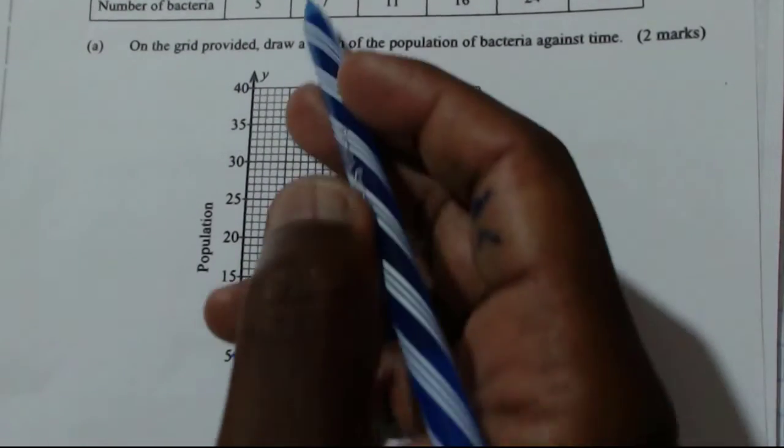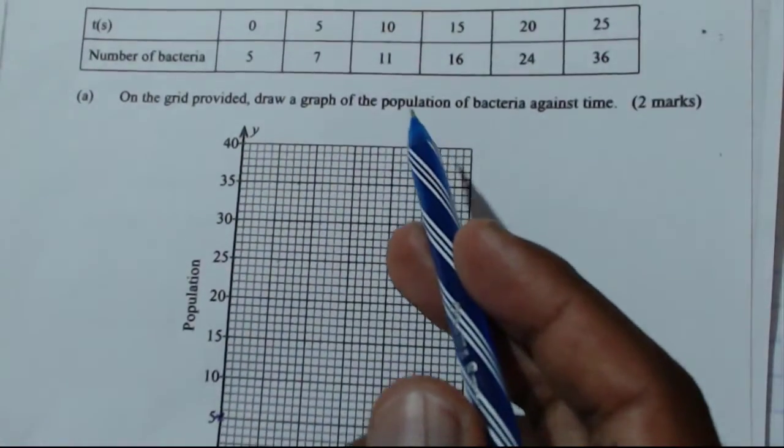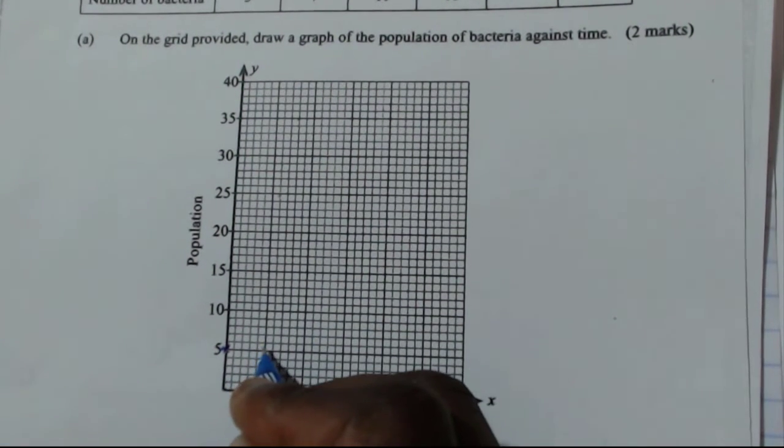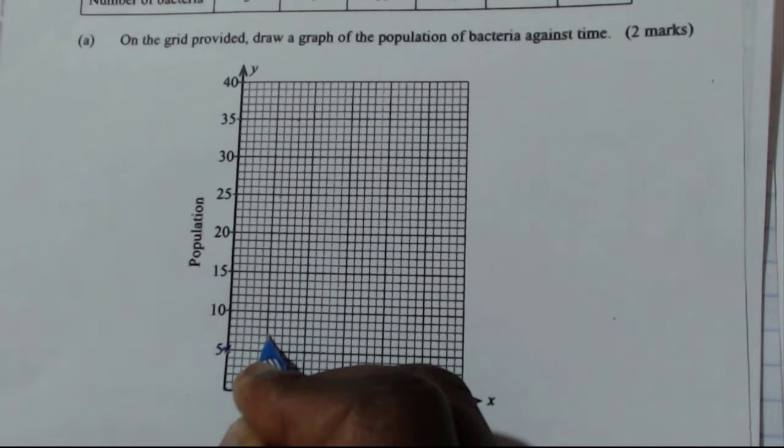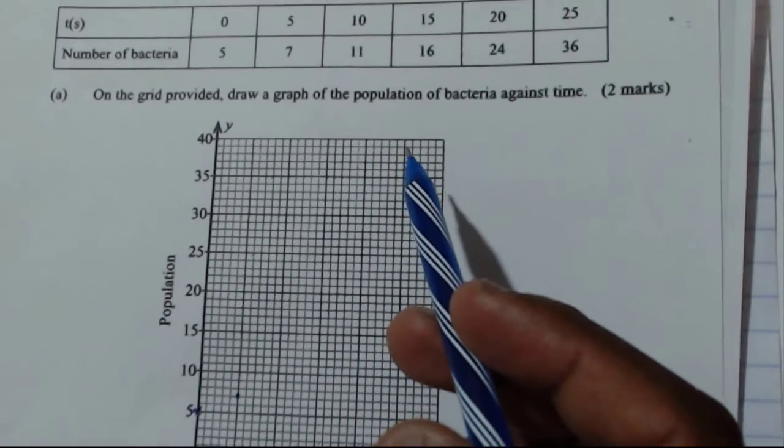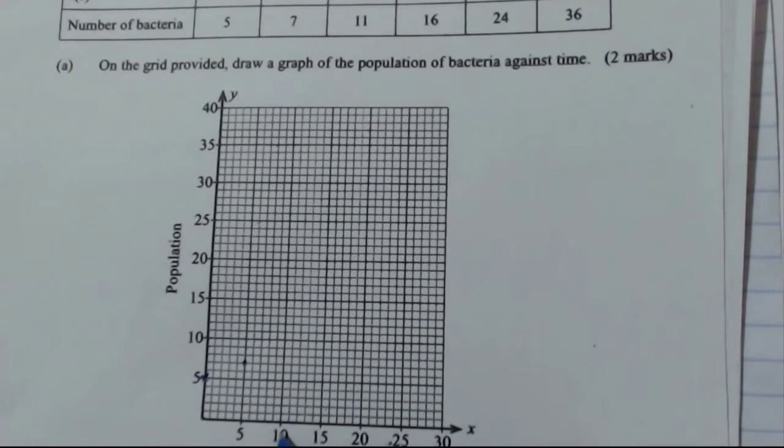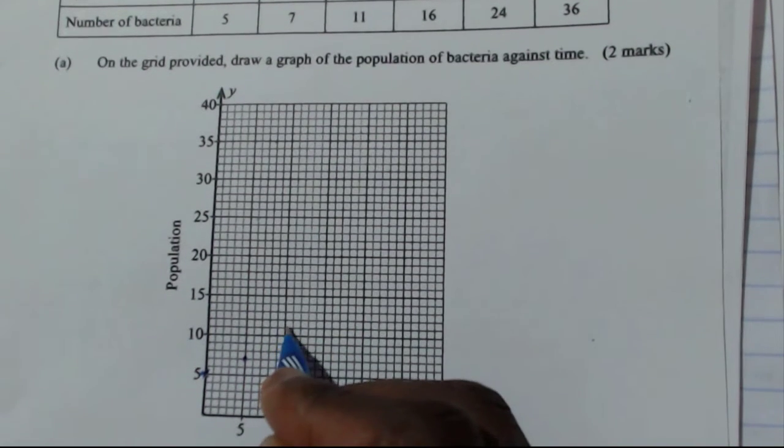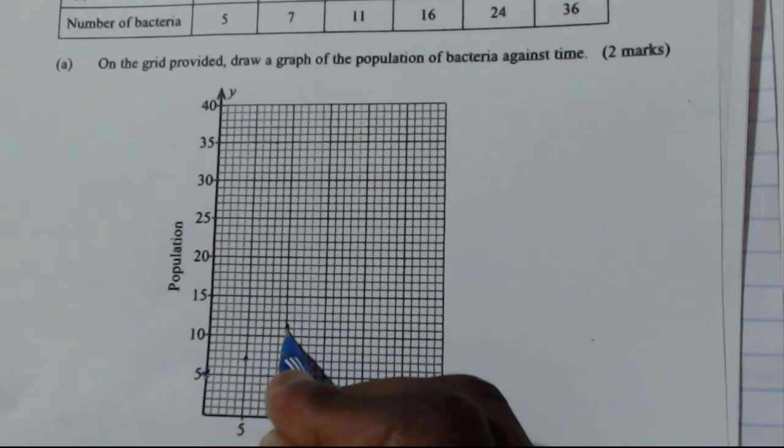Then five, seven. The second one is five, seven. So we have five, then we have six, seven, supposed to be there. Then the other one is 10, 11. So 10, 11 is here.